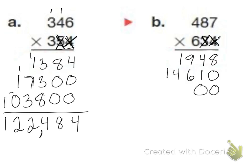Six times seven is forty-two. Put the two down, carry the four. Six times eight is forty-eight, plus four is fifty-two. Carry my five. Six times four is twenty-four, plus five is twenty-nine.